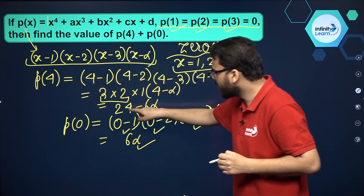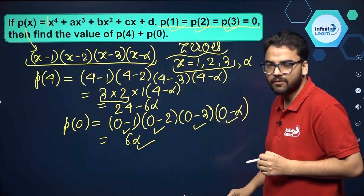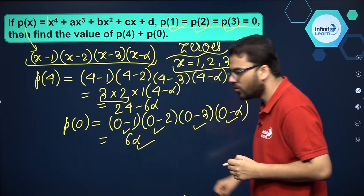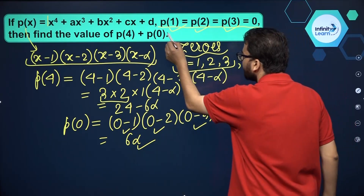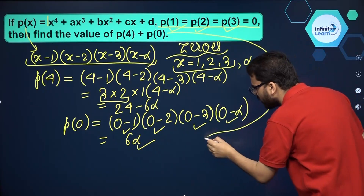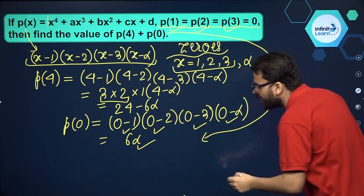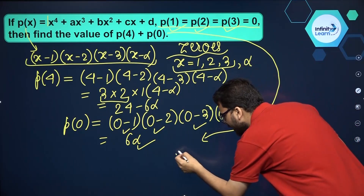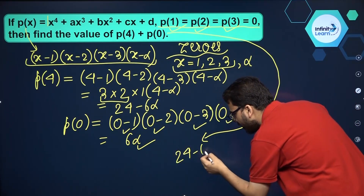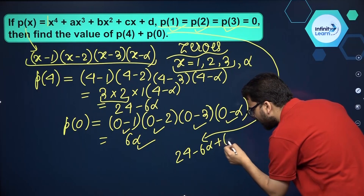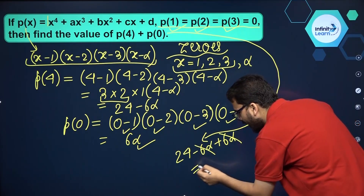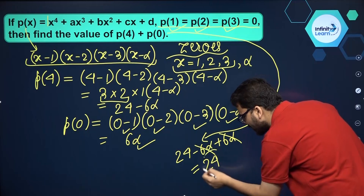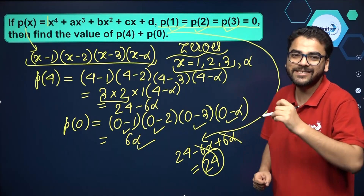So we have p of 4 equal to 24 minus 6 alpha, and p of 0 equal to 6 alpha. Therefore p of 4 plus p of 0 equals 24 minus 6 alpha plus 6 alpha. The 6 alpha terms cancel out, and the answer is 24. I hope this is clear to you.